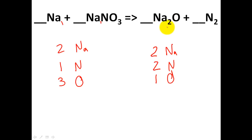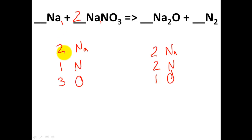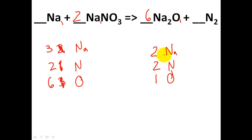Let's start with nitrogen. I have two nitrogens on one side and one nitrogen on the other. Putting a two there gives two nitrogens, making this two plus one Na — that's three Na's. Two times one N gives two nitrogens, and two times three gives six oxygens. Now dealing with oxygen: two times three gives me six oxygens. Right now I have one oxygen there, so I need to make it six — six times one gives six oxygens. Oxygen is now balanced, and nitrogen is balanced.